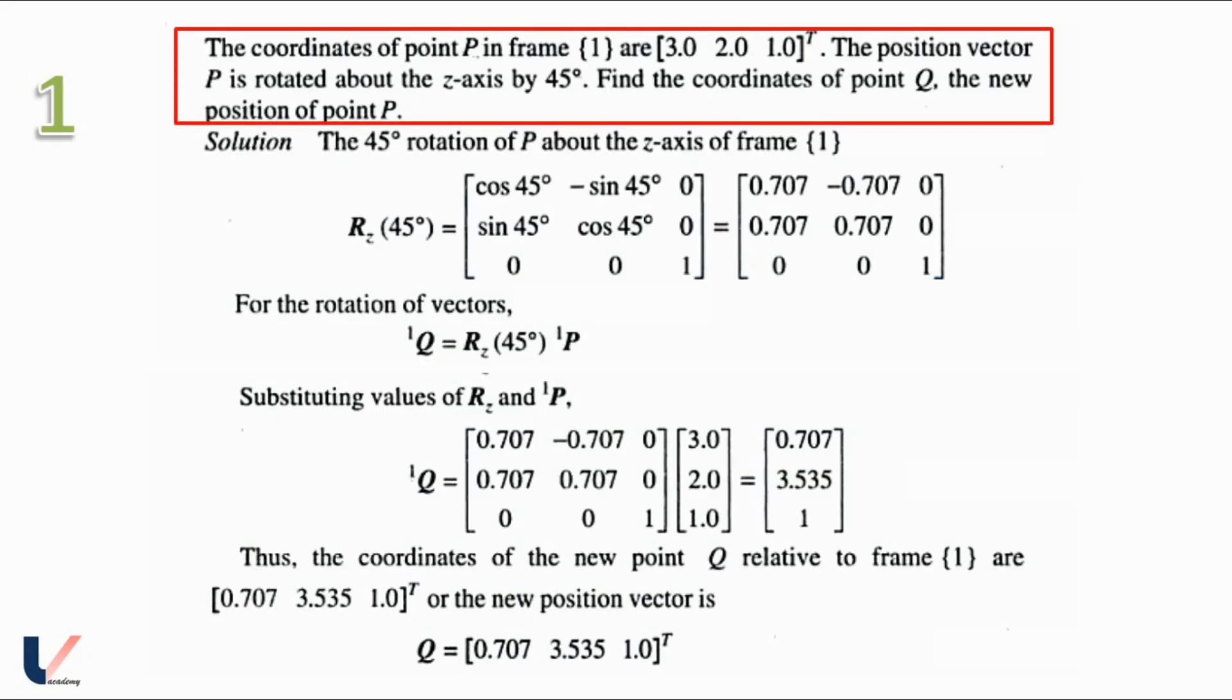So our first problem is the coordinates of the point P in frame 1 are 3, 2, 1. The position vector P is rotated about the z-axis by 45 degrees. We have to find the coordinates of the point Q, that is the new position of the point P after rotation.